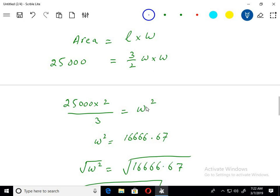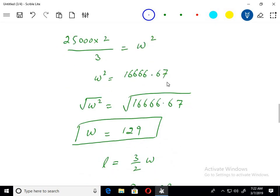W multiplied by W becomes W squared. This 2 will go there and multiply and this 3 will be divided. Using the calculator, simplifying this expression, I get W equals 129.